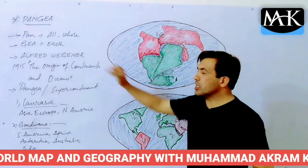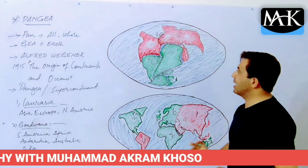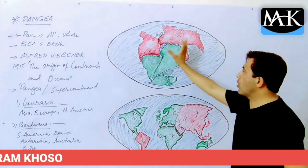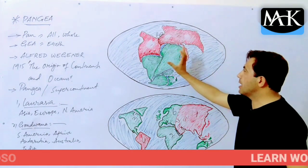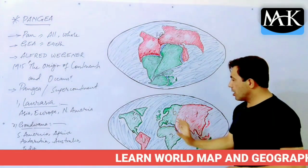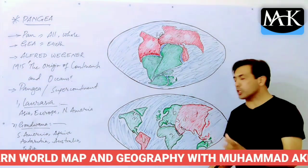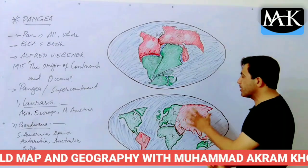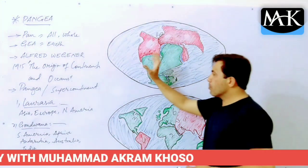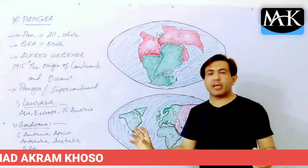Wegener said that almost 200 million years ago, the land was a single land mass. What we now have as seven separate continents were all combined in this single land mass called Pangea, meaning the entire or whole land mass.